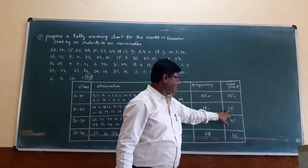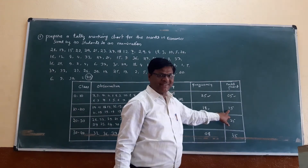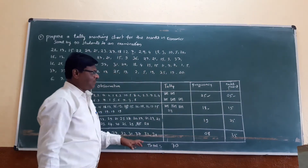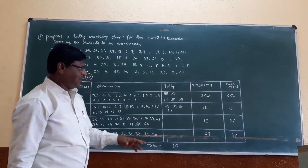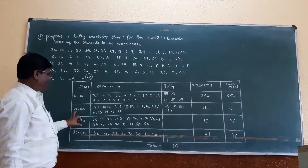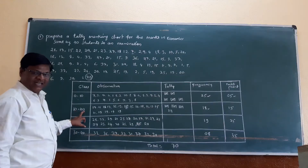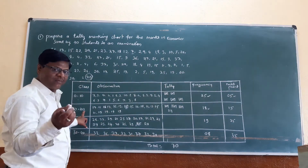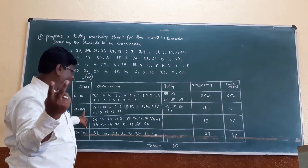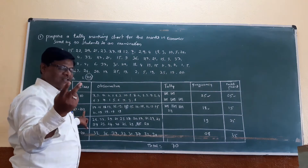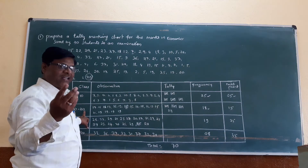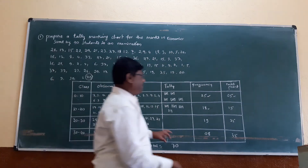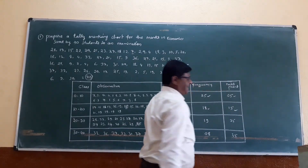The midpoint for class 10 to 20 is 15. It is calculated as 10 plus 20 equals 30, divided by 2 equals 15. Or half of 30 is 15.